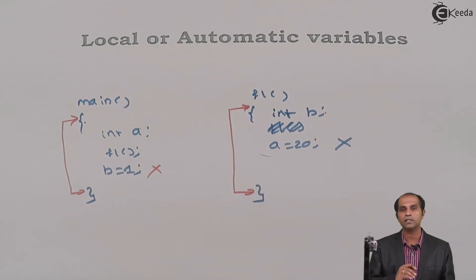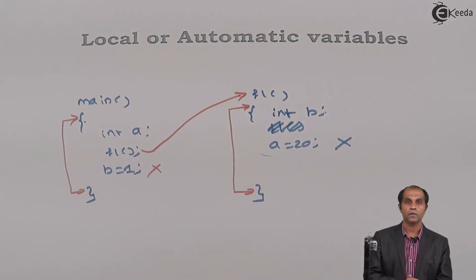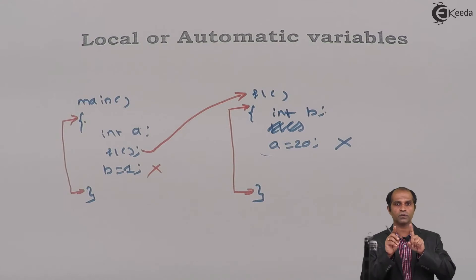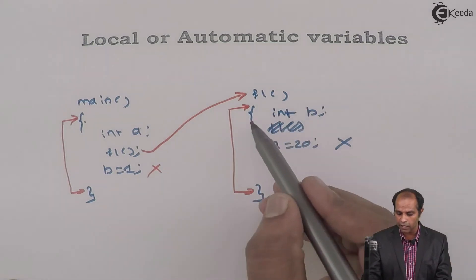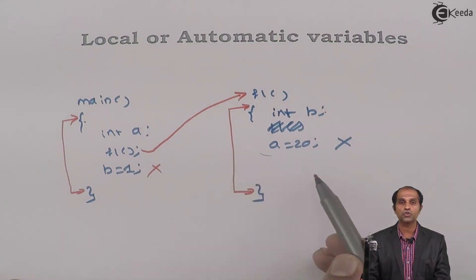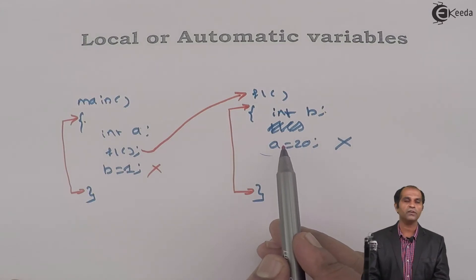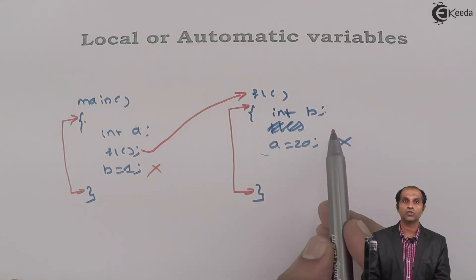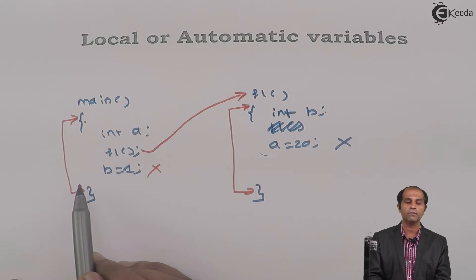When f1 is called, is the variable a destroyed or still in memory? A is still in memory, but it cannot be used in f1. This leads to two distinct terms: life and scope or visibility. The life of a exists while f1 is executing, but a loses its scope inside f1. B has both scope and life in f1, but has neither scope nor life in main.